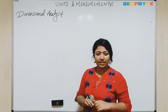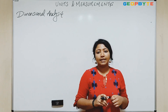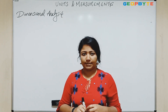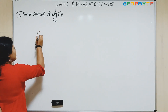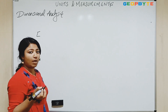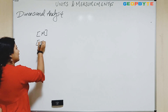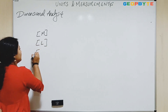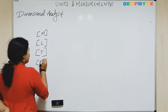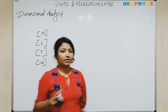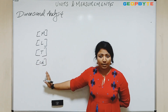Now we will move on to dimensional analysis. In the beginning of this chapter, I have told you that there are 7 base quantities. So we can represent the dimension using square brackets. If I am representing mass, I can represent it using this. If I am using length, I can use it like this. If it is time, I can use this. So you can represent all the base quantities using square brackets.